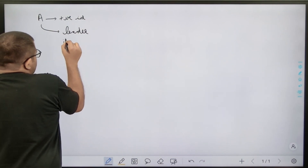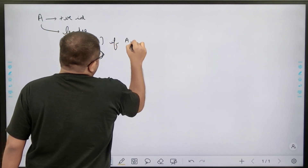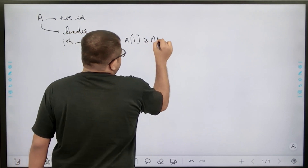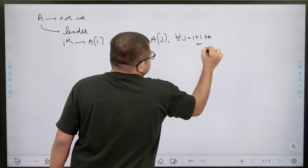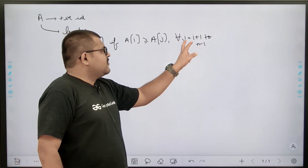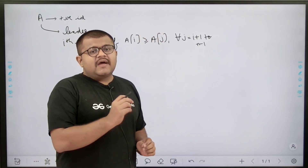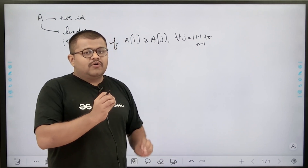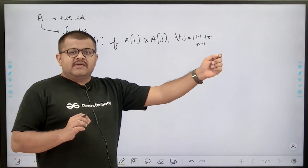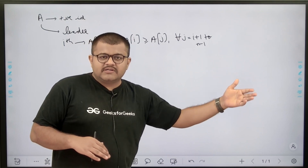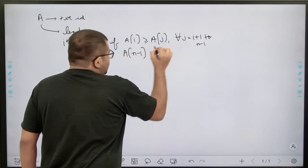So basically, in the input we are given an array A containing only positive integers. We need to find all the leader elements. We say an element A[i] is a leader element if A[i] is greater than or equal to A[j] for all j from i+1 to n-1. Since the rightmost element at index n-1 does not have any element further to its right, we consider it a leader element always.